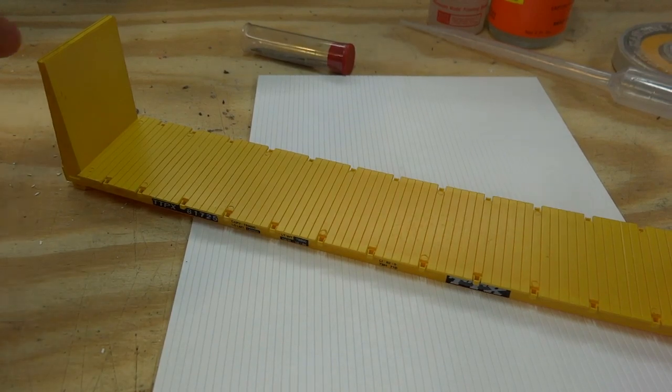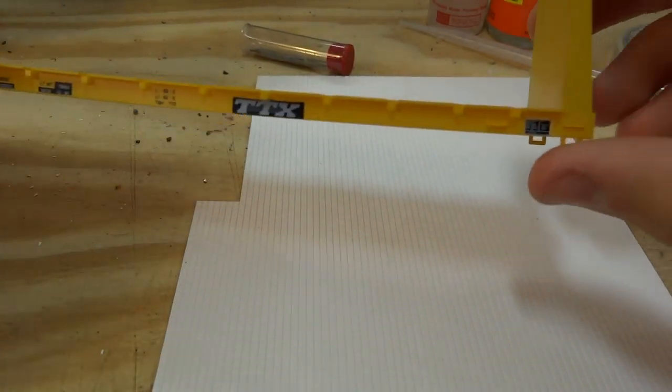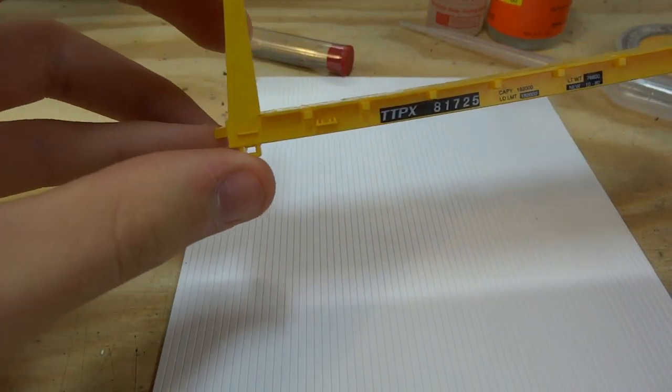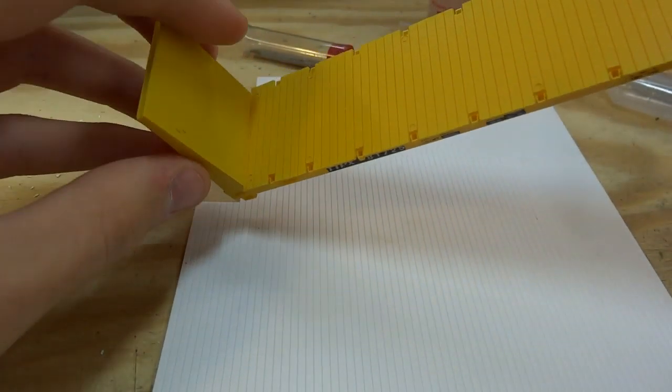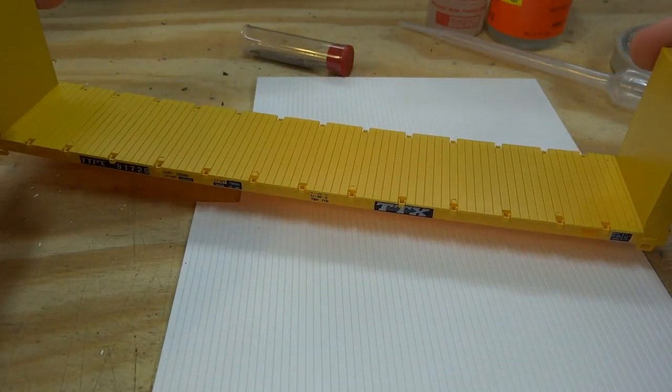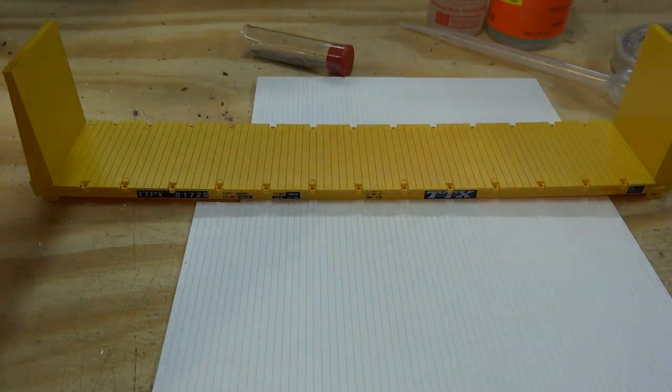Okay, so this video is going to be comprised of two different parts. First of all, we're going to work on the actual car itself by removing some of the old casting details, putting on better detail parts, changing the ends, weathering, painting, etc. Then the second part is going to be the load that we're going to put on this thing.